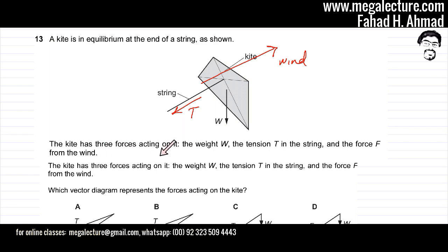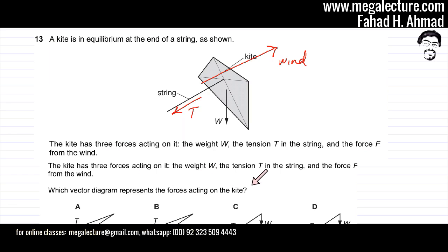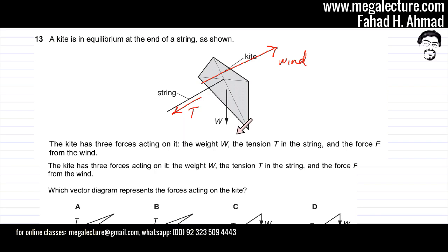So you have the kite with three forces acting on it: the weight W, the tension T, and the force F from the wind. Remember the general direction of each force — tension T, the string is pulling the kite this way; wind is pushing the kite the opposite way; and W is pointing downwards, that's the weight of the kite. And all three forces are in equilibrium.